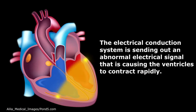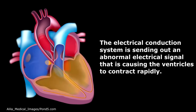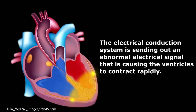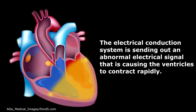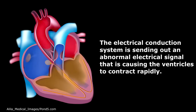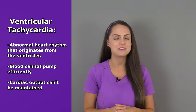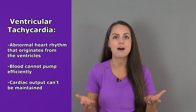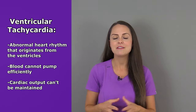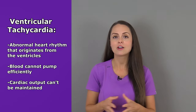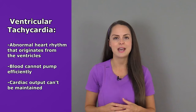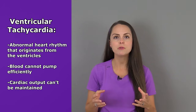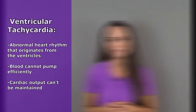This rhythm occurs because the electrical conduction system is sending out an abnormal electrical signal that is causing those ventricles to contract very rapidly. The problem with this rhythm is that the ventricles cannot pump blood out efficiently through the heart, and if they can't do that, cardiac output cannot be maintained. So we really want to correct this as soon as we notice it.